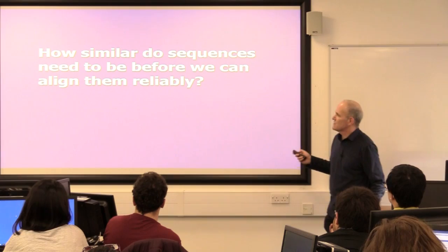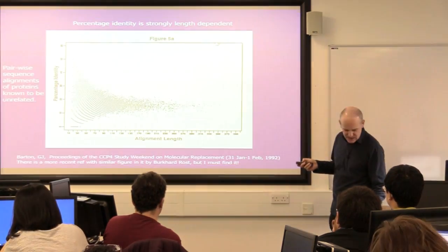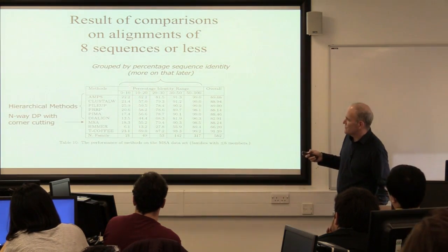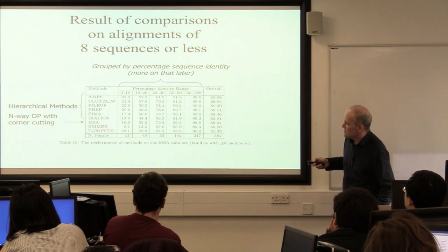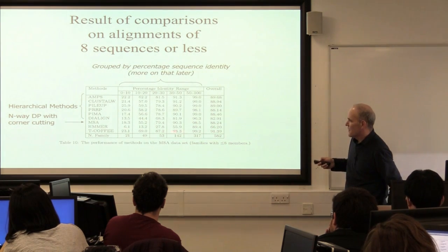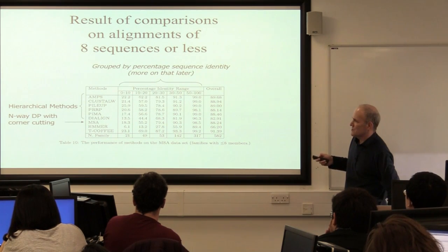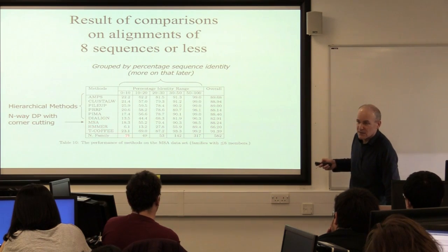The other question is how similar sequences need to be. If you look for sequences that are less similar, as you might expect, as sequence similarity reduces, even for the very best method — which is T-Coffee in this test — the accuracy of the alignment goes down. So for sequences that really don't share very much sequence identity, the accuracy is really quite low, about 23% in that case.